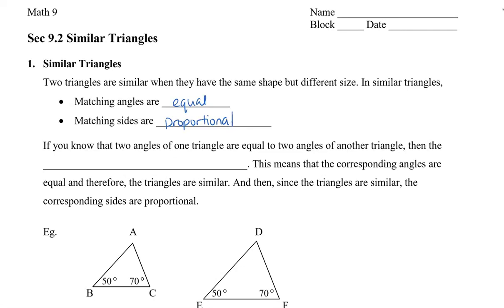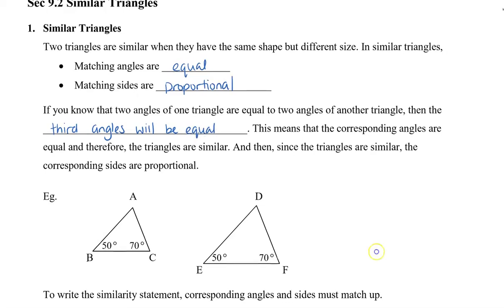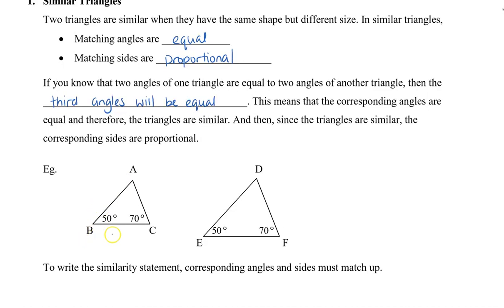Now if you know that two angles of one triangle are equal to two angles of another triangle, then the third angles will be equal. Let me show you this below. So we have two triangles ABC and DEF.